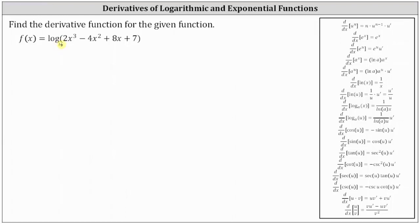Next, notice how we have a composite function where the inner function often referred to as u is the cubic function two x cubed minus four x squared plus eight x plus seven.